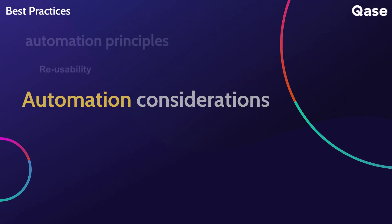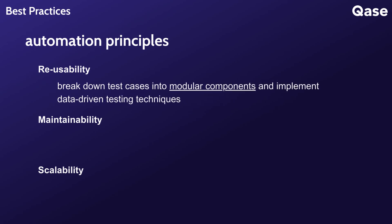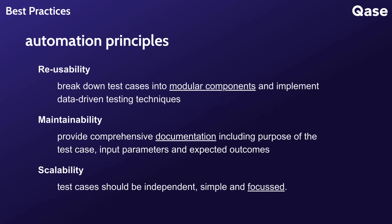Consider automation principles such as reusability, maintainability, and scalability when planning automation. Be mindful and refrain from creating test cases that require unrealistic resources or are overly complex and difficult to automate. Instead, create modular test cases that can be easily automated. Evaluate whether test cases are structured in a way that allows for easy automation, such as modular design and clear steps that can be translated into automation scripts.